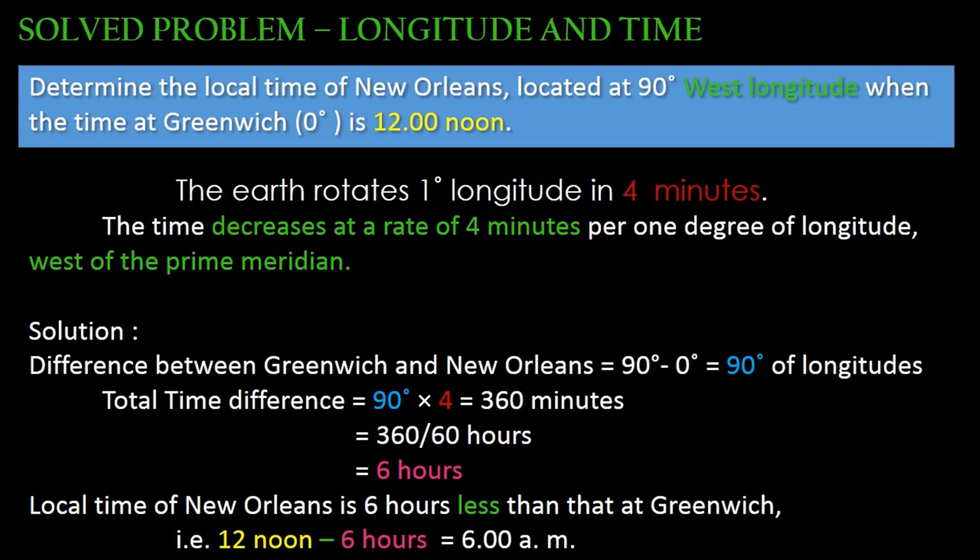Determine the local time of New Orleans, located at 90 degrees west longitude, when the time at Greenwich (0 degrees) is 12 noon. The time decreases at the rate of 4 minutes per 1 degree of longitude west of the prime meridian. The first step is to find the difference between Greenwich and New Orleans: 90 degrees minus 0 degrees equals 90 degrees of longitude. The time difference is 90 degrees into 4 minutes, equal to 360 minutes.